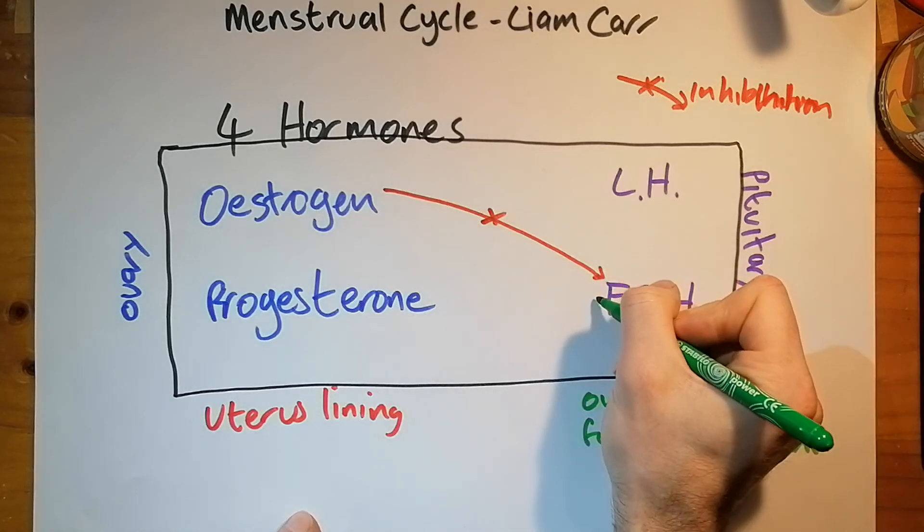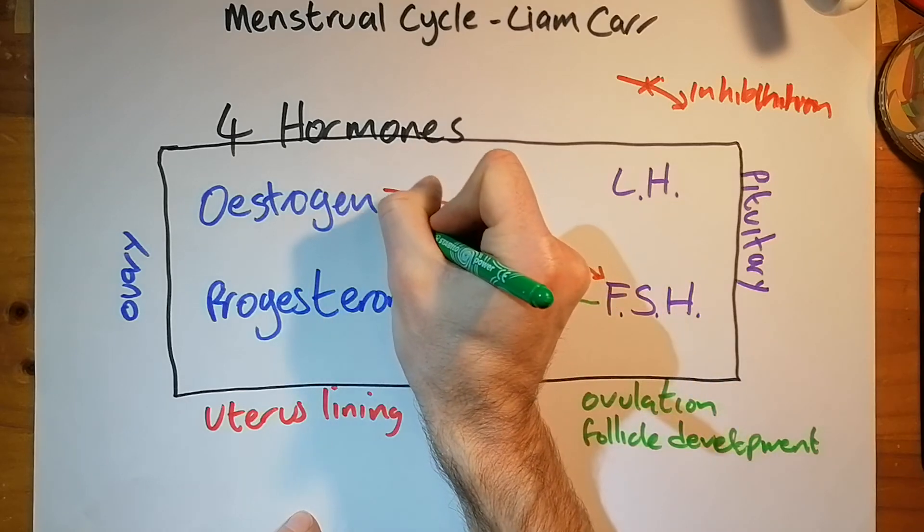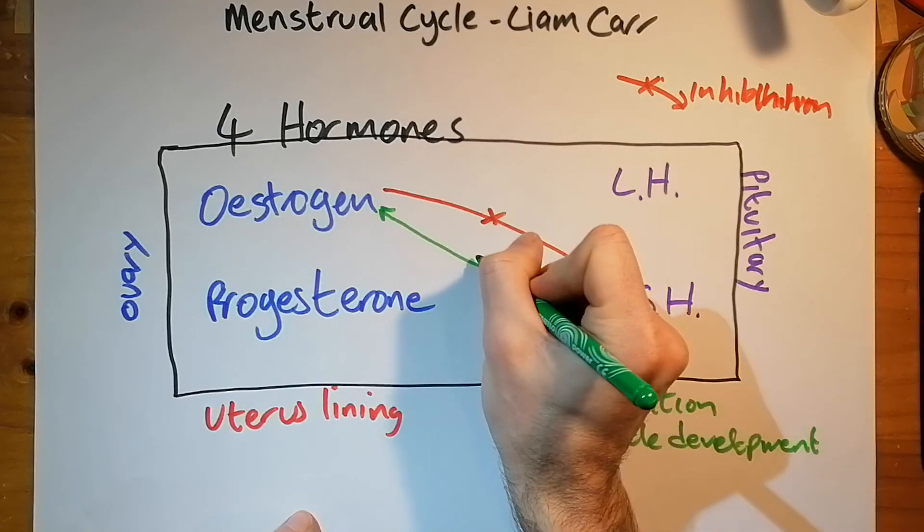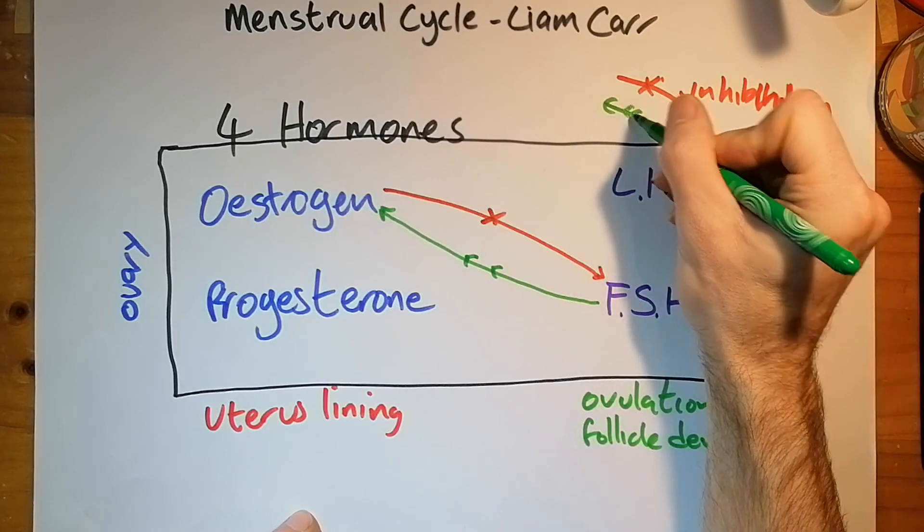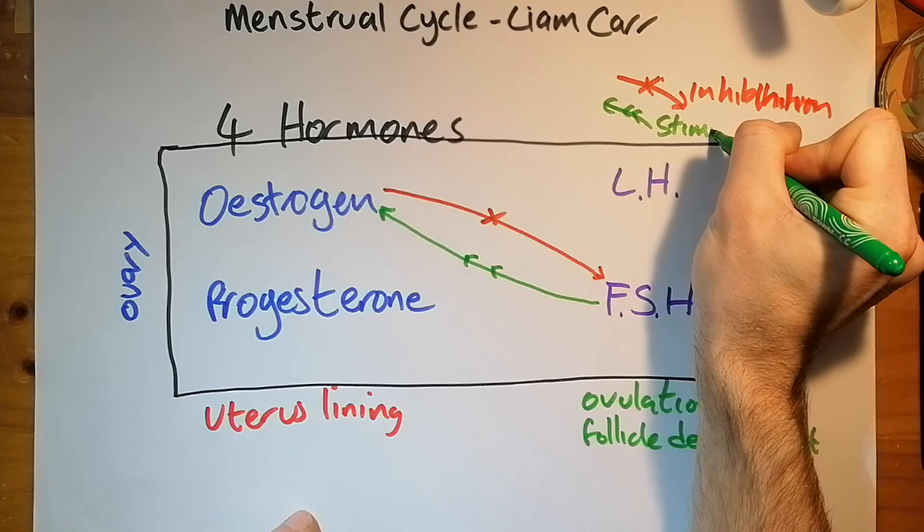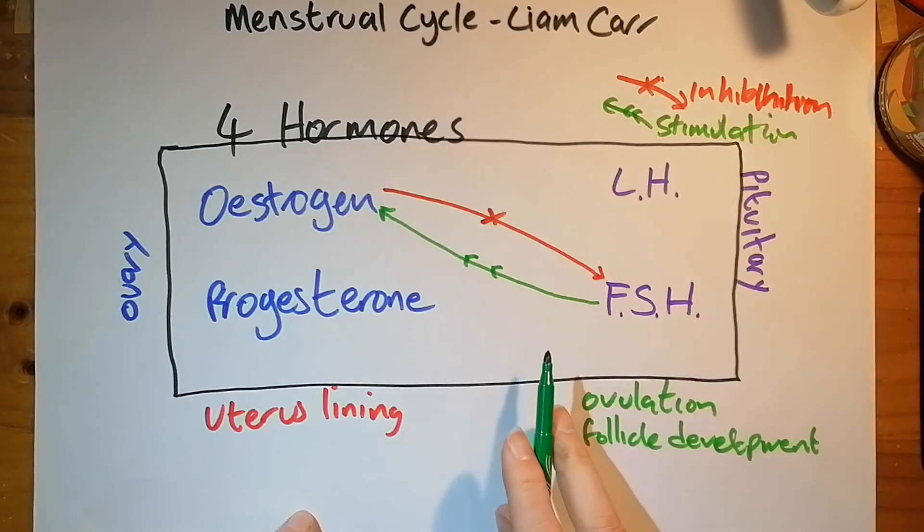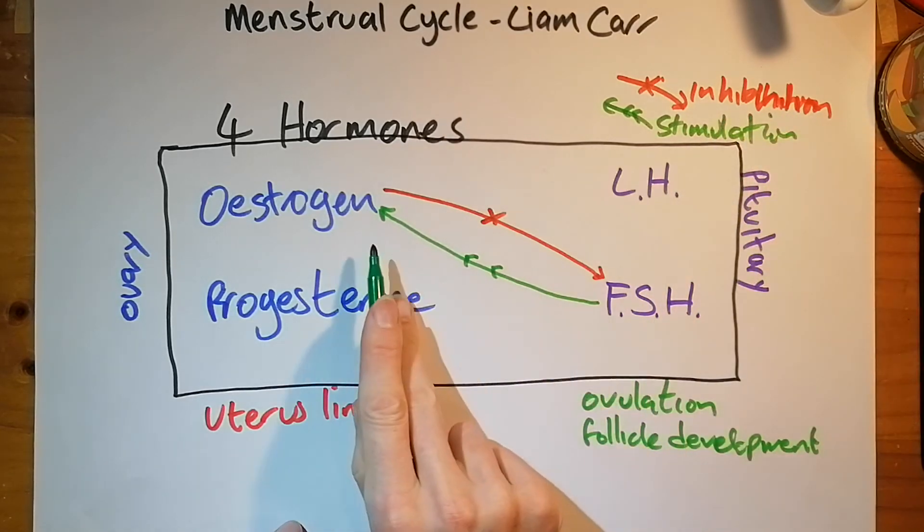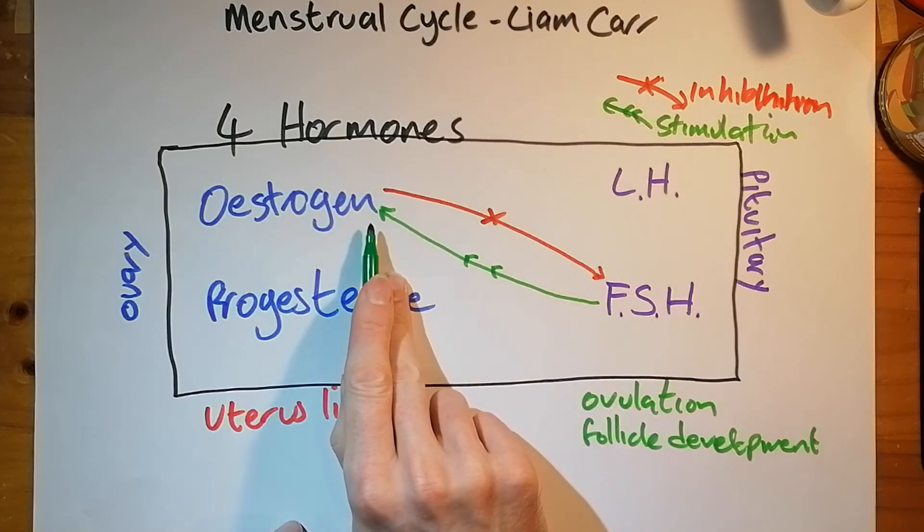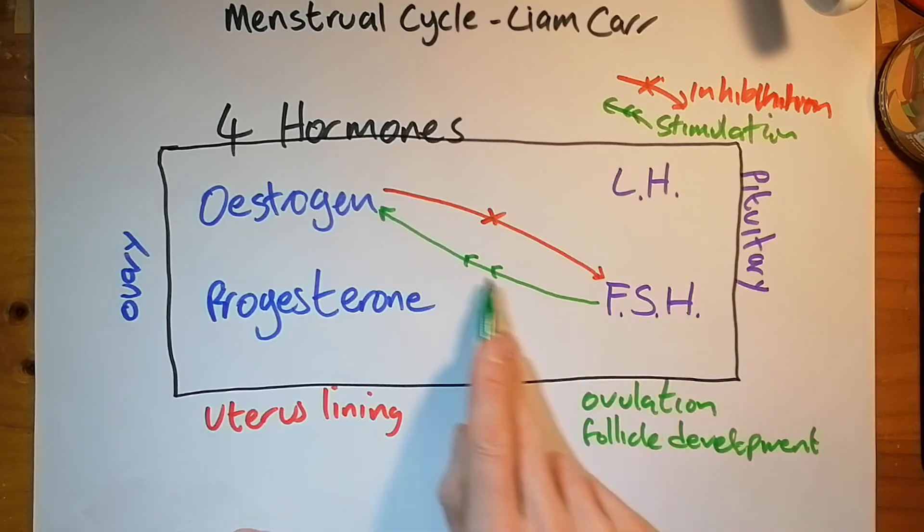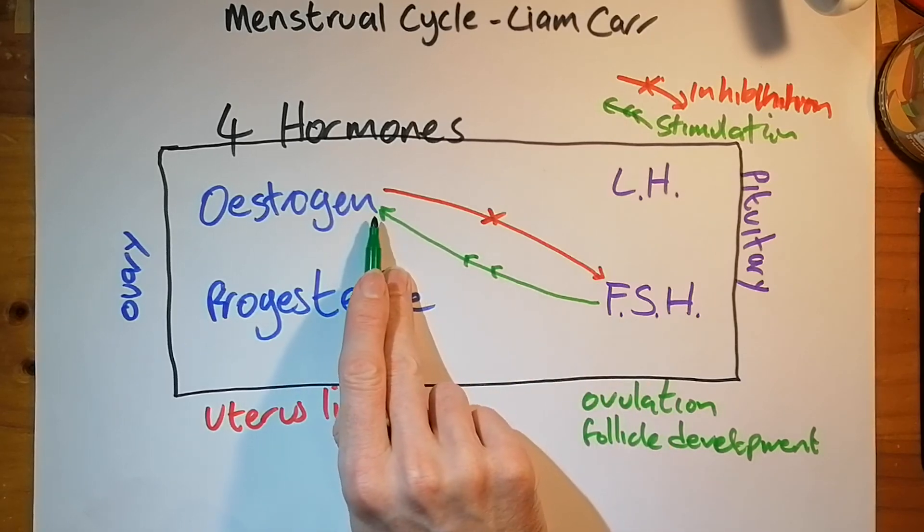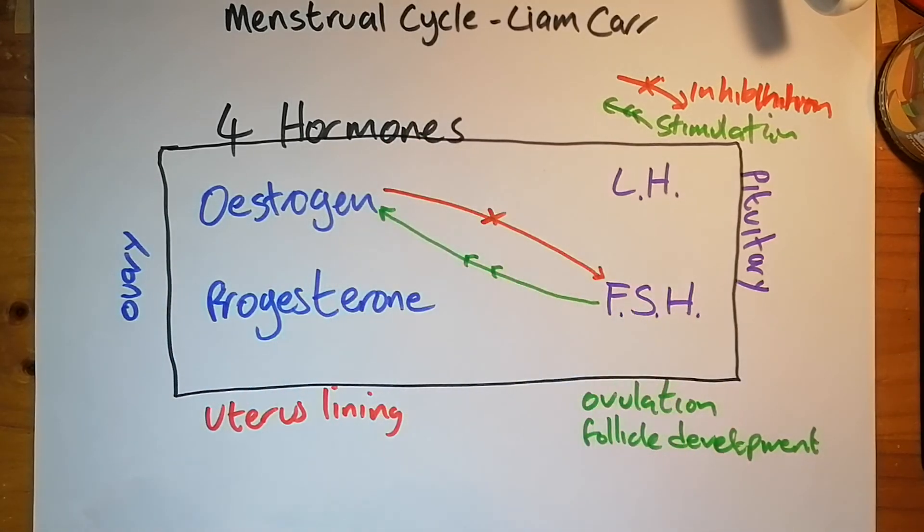And FSH actually stimulates estrogen release. And that is the key I'm going to use for that stimulation. With double arrow. So here you've got FSH stimulates estrogen. But then estrogen inhibits FSH. Which means you've got a negative feedback loop going on there. So if FSH is causing estrogen release, that estrogen gets released and stops the release of FSH. So it's like a form of regulation.